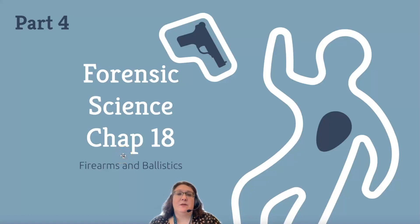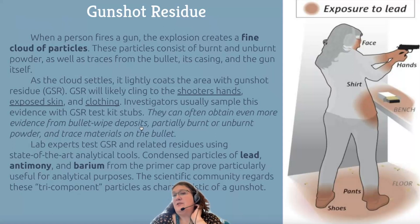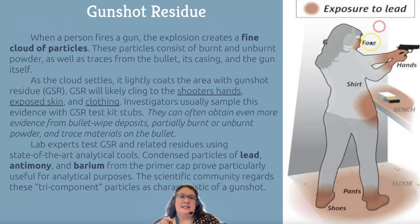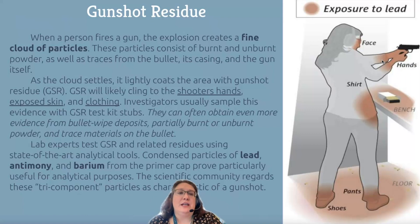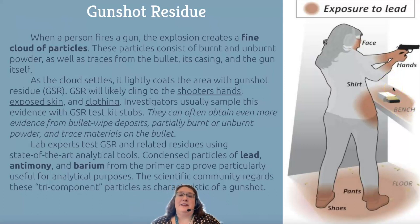Today we are talking about our fourth part of our information about ballistics and how to use them in forensics. We're going to start talking about gunshot residue. Basically when a person fires a gun, the explosion creates a super-fine cloud of particles. It tends to land on the hands, the face, the shirt, underneath the arm area, and usually on the bottoms of the pants near the shoes. The area underneath where the gun was fired would also have gunshot residue on it.